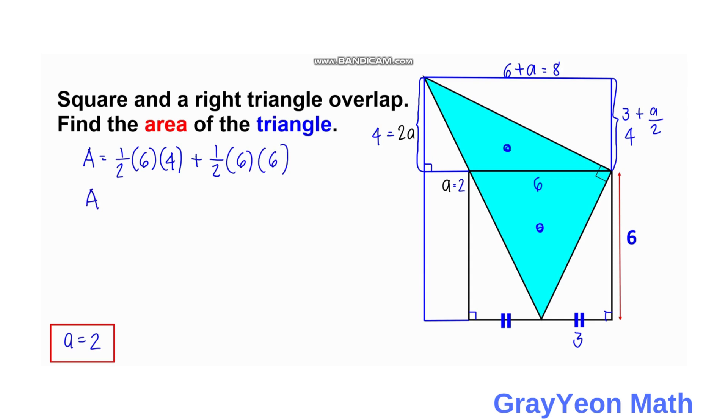So we have area is equal to... 6 divided by 2 is equal to 3, times 4, 12. And 6 divided by 2 is 3. So we have 18. So area is equal to 12 plus 18. So it becomes 30 square units.